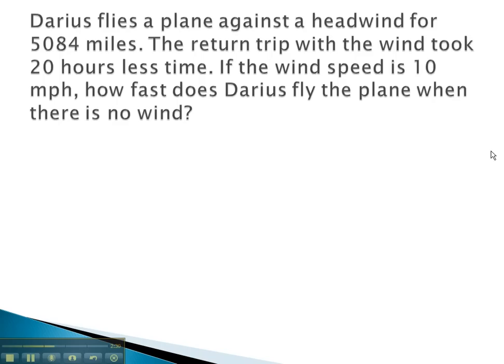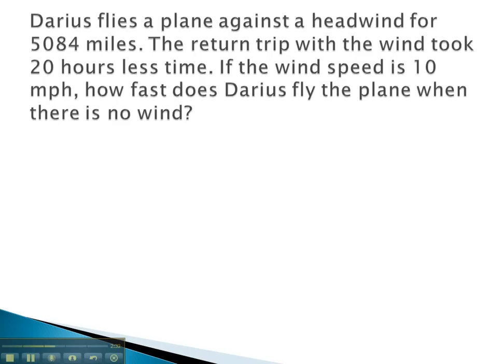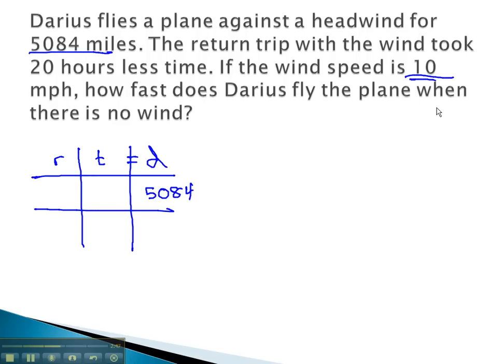Let's try another example. In this problem, we have a plane flying against a headwind for 5,084 miles. This is our distance. She's flying against a headwind of 10 miles per hour. When she flies against the wind, her rate is decreased by 10 for a certain amount of time.